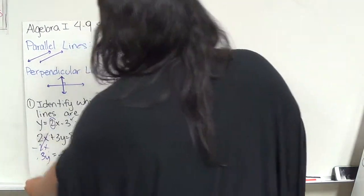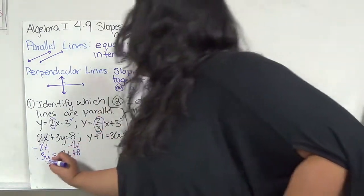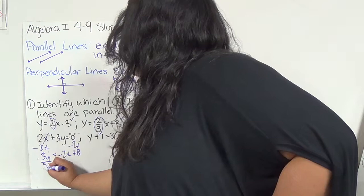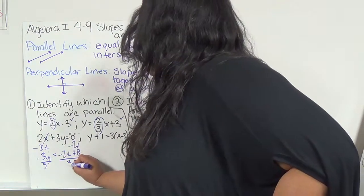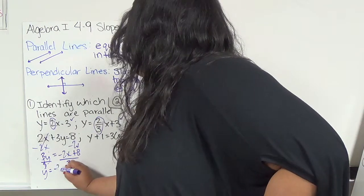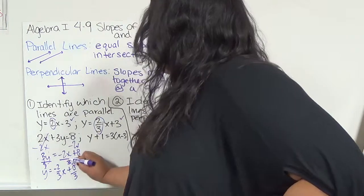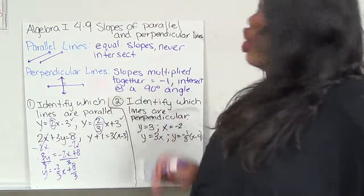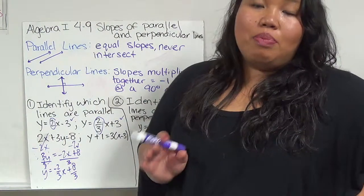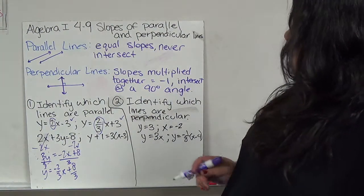So 3y equals negative 2x plus 8. That negative follows the 2x. It doesn't go with the 8, and I can't combine the 8 and the 2x together. When I divide, I'm going to divide the whole thing by 3. This becomes y equals negative 2 over 3x plus 8 over 3. I take that 3 and distribute to each term, which is broken up by a plus or negative sign.